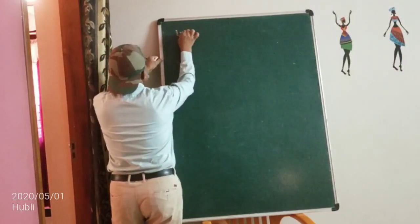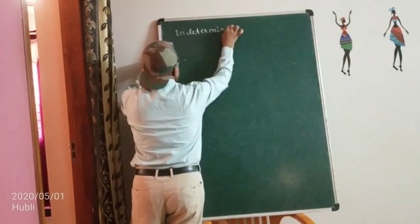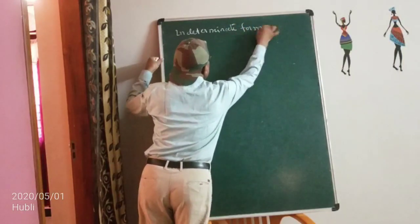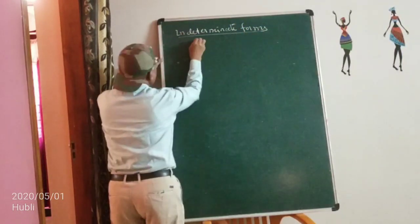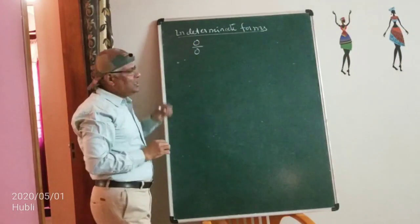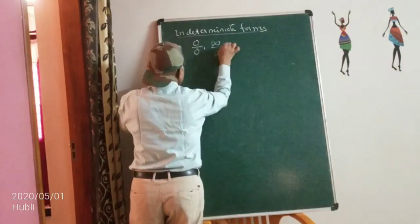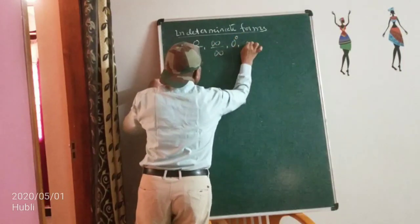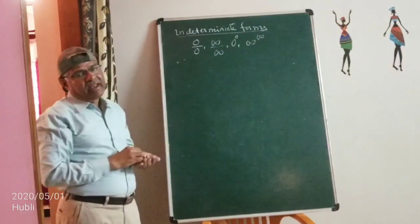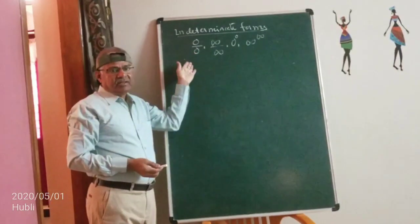Now let's see what the indeterminate forms are. The indeterminate forms are: 0/0, ∞/∞, 0⁰, and ∞^∞. These are known as indeterminate forms. While calculating the limit, you eliminate the indeterminate factor and then evaluate the limit.